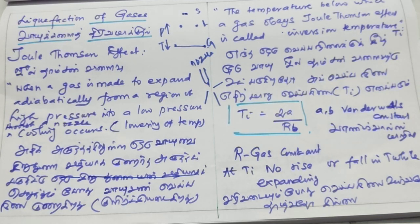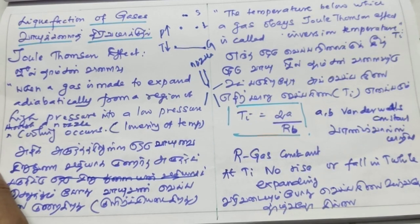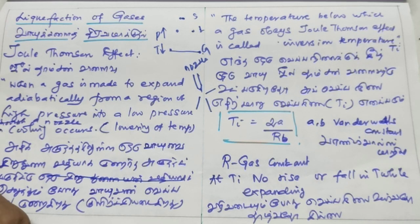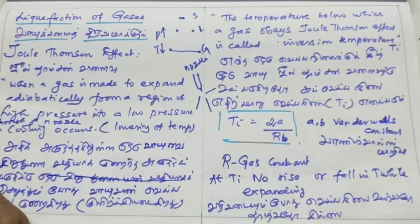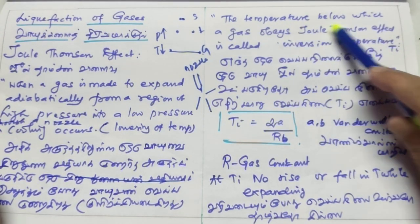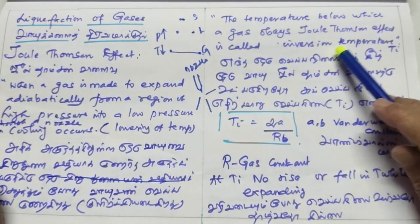The Joule-Thomson effect is the most important thing. If you have high pressure gas expanded to low pressure, the gas is cooled — this is the Joule-Thomson effect. Cooling will occur below a particular temperature. Above that temperature, cooling will not occur. So the temperature below which a gas obeys the Joule-Thomson effect is called the Inversion Temperature.